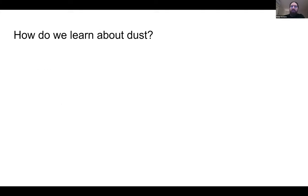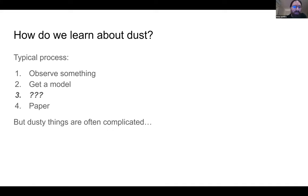So, how do we go and learn about dust? Well, the usual process of learning something about the universe is you go and observe something and you get a model. And then you do something with it and you end up writing a paper. And, of course, all the action is in step three, where hopefully you can do something simple, but in general, dusty things are complicated and we have to do complicated things to understand our observations properly and learn something from them effectively.